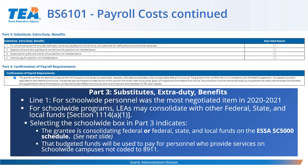Section 1114 states that for school-wide programs, LEAs may consolidate federal, state, and local funds. By selecting the school-wide checkbox in Part 3, the grantee is indicating they are consolidating funds on the ESSA SC5000 schedule, and that the budgeted funds will be used to pay for personnel who provide services on school-wide campuses not coded to 8911. A validation alert has been added to the system if you select this checkbox, because several grantees selected it without indicating they were consolidating funds in the SC5000, causing the application to go back into negotiation.